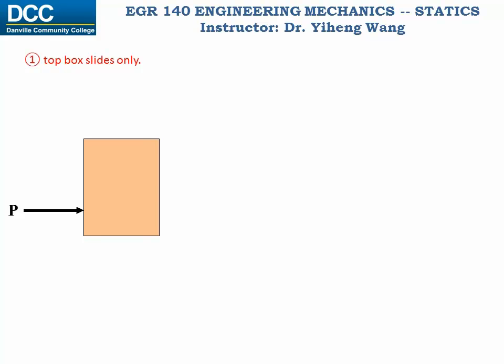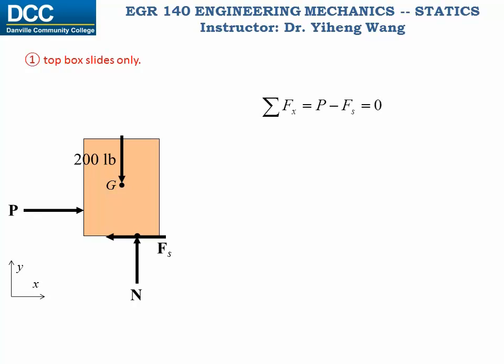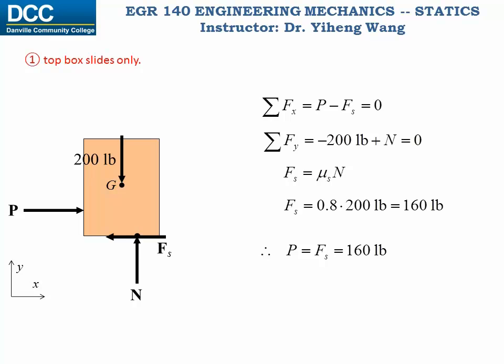First, consider the situation when the top box is about to slide. We complete the free body diagram of the top box, adding the weight and the normal force — their exact locations are not important since we are not concerned with tipping. The impending motion is to the right, so the static frictional force is to the left. Writing the two force equilibrium equations and applying Fs = μs·N, we calculate P = 160 pounds.